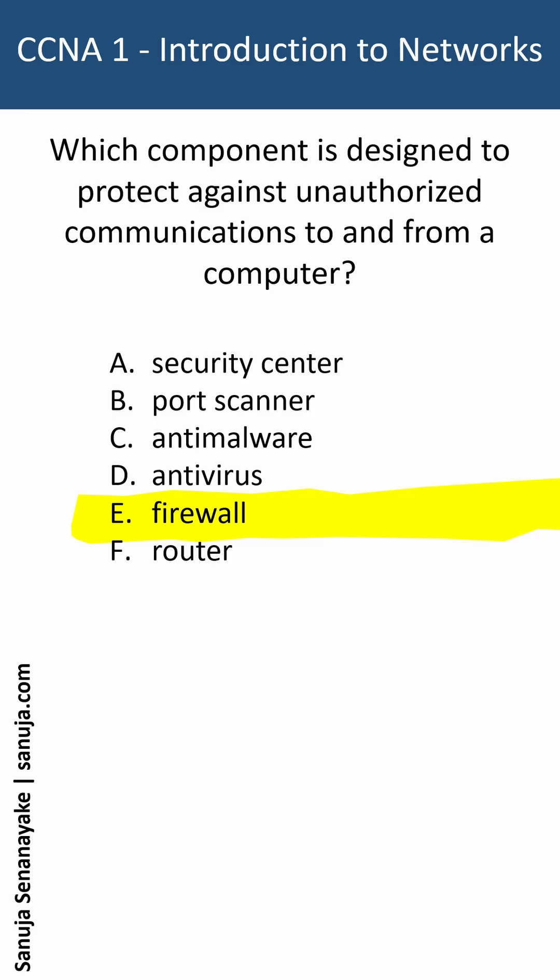Some firewalls may reside inside a router, but that's not the main purpose of a router. So any unauthorized communication to and from a computer is actually managed by or prevented by the rules that you set within the firewall itself. That's why the answer is E, even though some may think that the router is the answer because some firewalls do reside in a router.